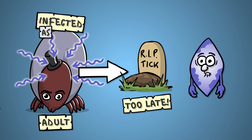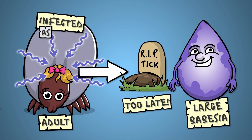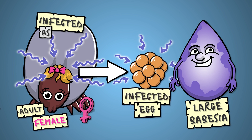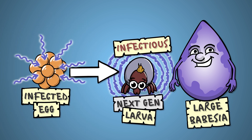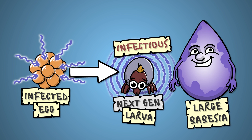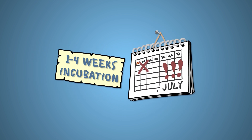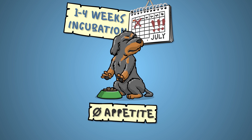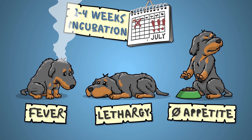Large-type Babesia, however, have the ability to invade the eggs of female ticks and make the next generation of the parasite infectious from the start. So how does Babesiosis manifest in your dog? After a one to four week long period of incubation, you'll usually notice your pet losing its appetite, becoming lethargic and sometimes feverish.